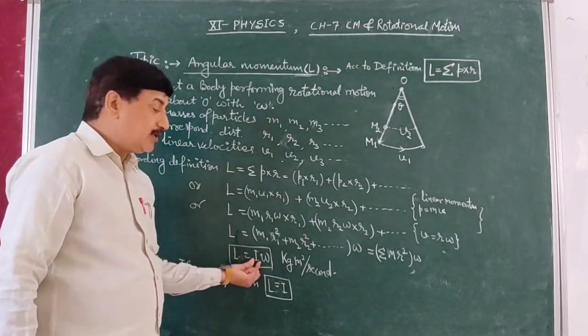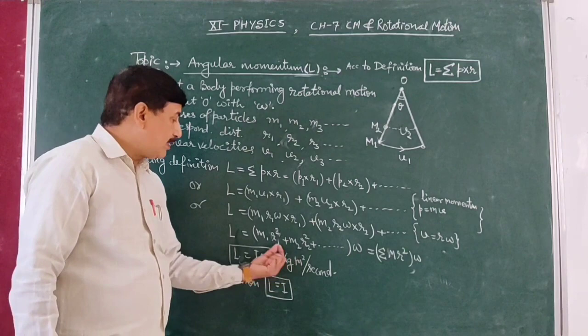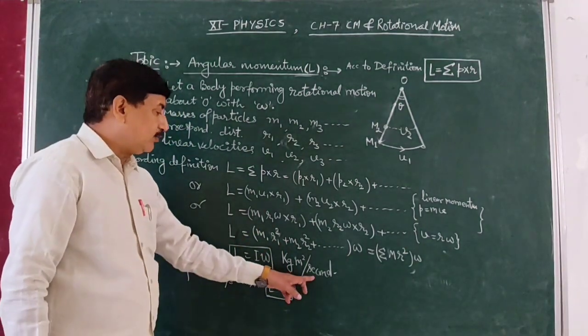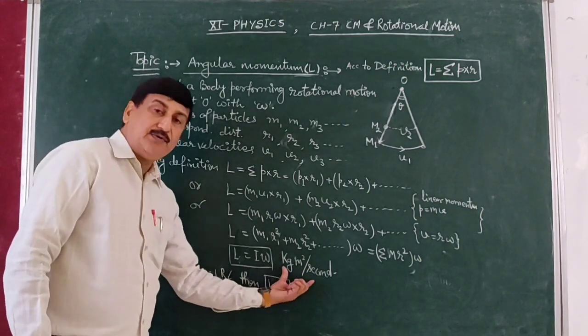The moment of inertia is in kilogram meter squared, omega is in radians per second, so the unit of angular momentum is kilogram meter squared per second.